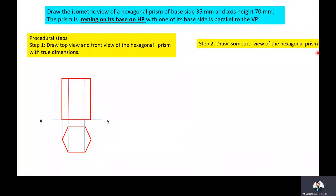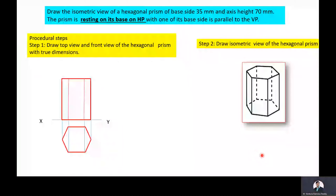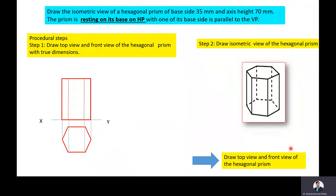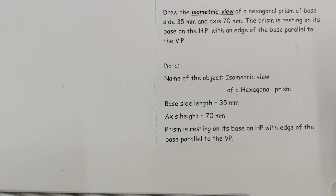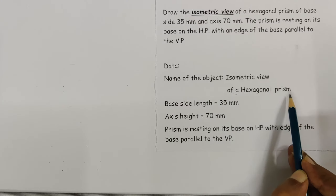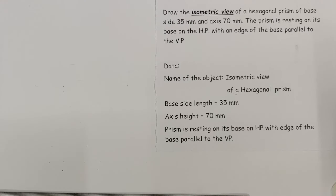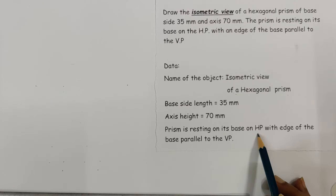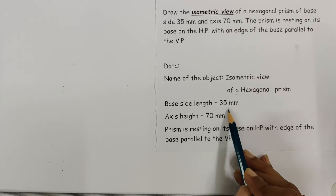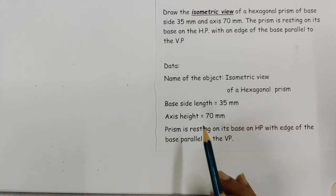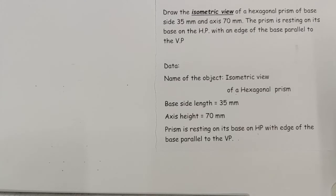After that we need to draw the isometric view of the hexagonal prism. We will discuss how to draw the top view and front view of the hexagonal prism, followed by drawing the isometric view. For drawing the isometric view, first we need to draw the orthographic projections of the hexagonal prism. The hexagonal prism is resting on its base on HP with the edge of the base parallel to VP, with base side length 35 mm and axis height 70 mm.